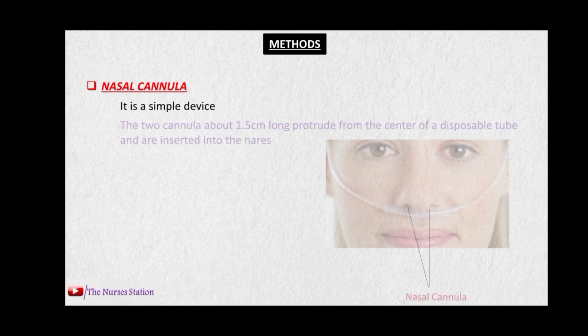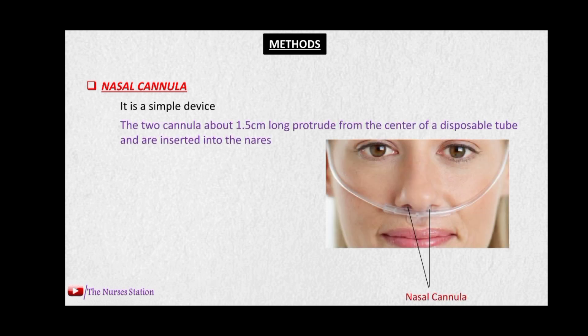The first method is the nasal cannula method. It is a very simple device in which two cannulas are protruding out of a plastic disposable tube, and these are inserted into the nostrils so that oxygen is delivered through them. Each cannula is about 1.5 centimeters long. The flow rate in the nasal cannula method is usually 4 liters per minute.